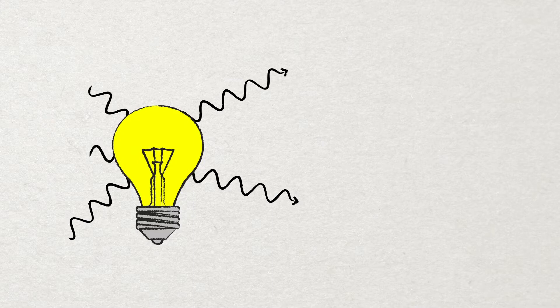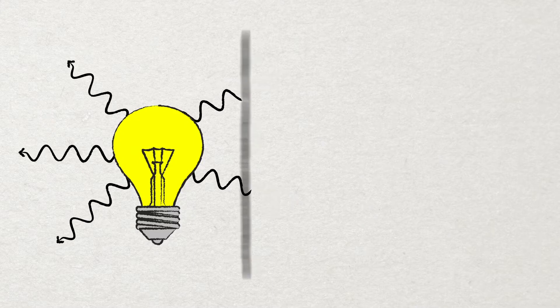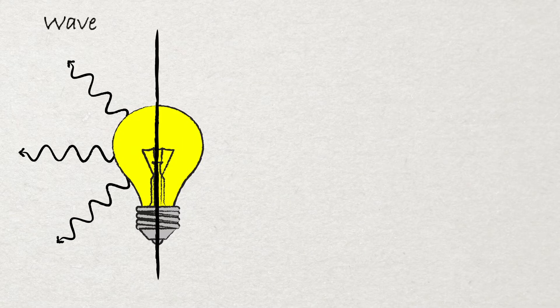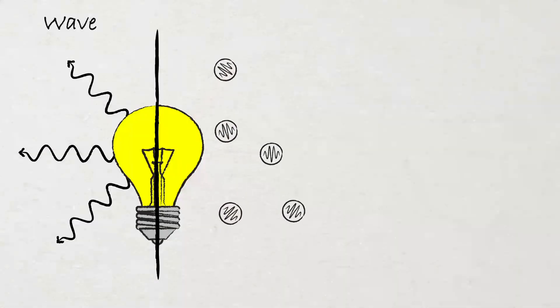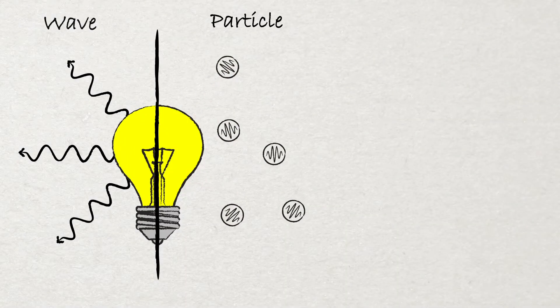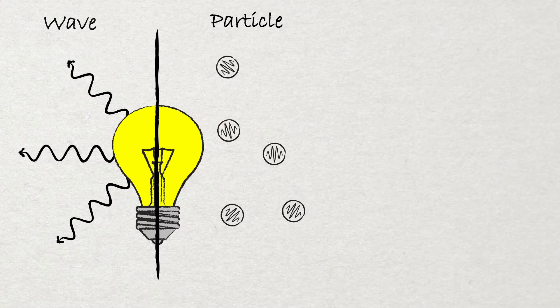We can see things around us because of the light that is reflected off these things into our eyes. This light behaves as both a wave and a particle because it's a quantum mechanical object. And this is important because quantum mechanics plays a crucial role in the colors that we see.